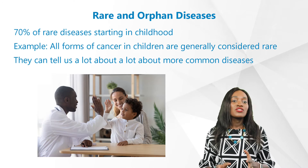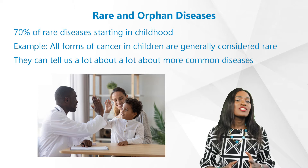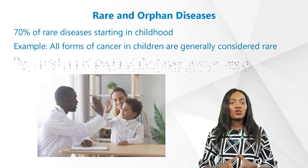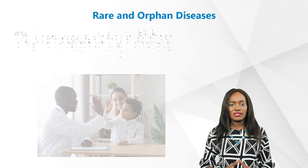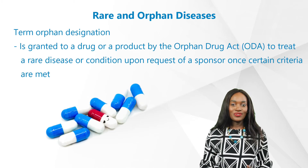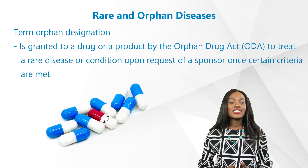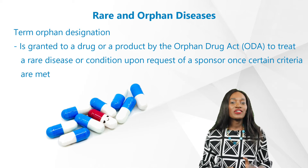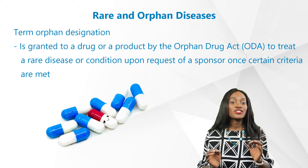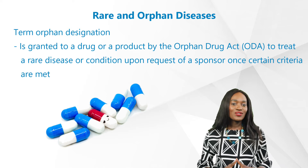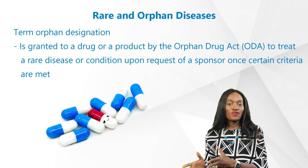Hence, rare diseases should not be ignored, as they can tell us a lot about more common diseases. We have however had progress in recent decades, resulting in developments and legal frameworks being put in place to encourage manufacturers to develop treatments for such conditions, bringing us to the term orphan designation.